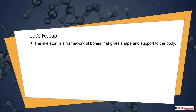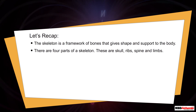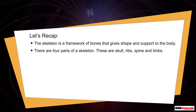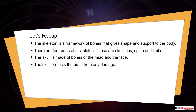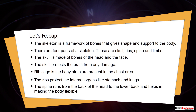Let's recap. The skeleton is a framework of bones that gives shape and support to the body. There are four parts of a skeleton: skull, ribs, spine, and limbs. The skull is made of bones of the head and the face, and it protects the brain from any damage. The rib cage is the bony structure present in the chest area, and the ribs protect internal organs like the heart and lungs.